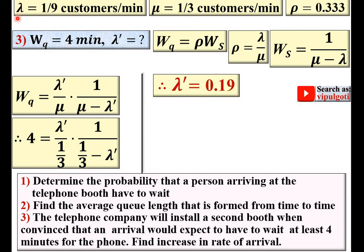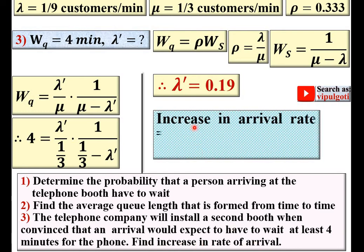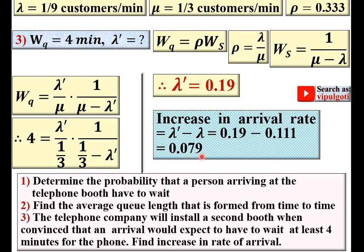Previously, lambda — the arrival rate — was 1/9 = 0.111. The new rate is 0.19. The increase in arrival rate = new arrival rate − old arrival rate = 0.19 − 0.111 = 0.079. So the increase in arrival rate is 0.079 customers per minute.